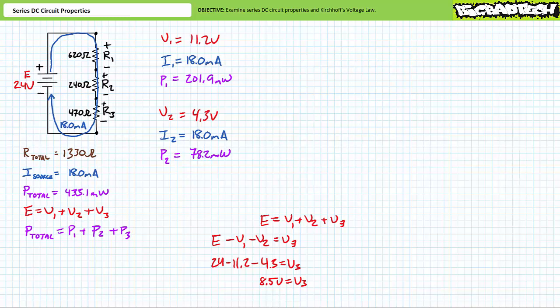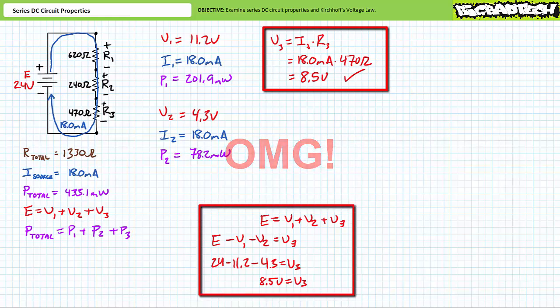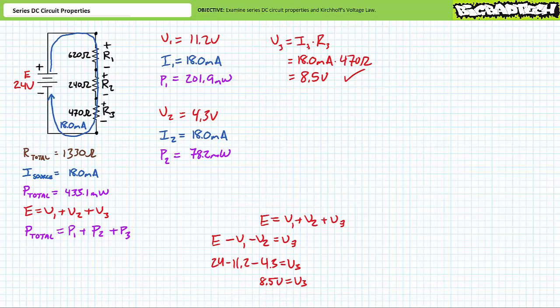This seems correct, being a value between the largest and smallest voltage drop. Let's use Ohm's law to confirm: V3 equals I3 times R3. R3 carries roughly 18 milliamps. Substituting our given values demonstrates V3 to be roughly 8.5 volts — the same answer we obtained using an algebraic manipulation of the KVL equation. This is not a happy coincidence, but rather a system of checks and balances. There is one right answer and all methods will yield this same right answer. The algebraic manipulation of the KVL equation necessitates only addition and subtraction, whereas Ohm's law necessitates multiplication and division. Kirchhoff's voltage law is stupidly simple and you'd be a fool not to make use of it to check your work.